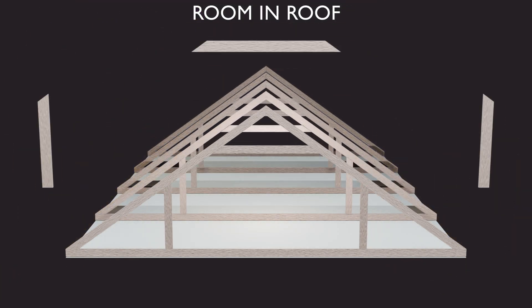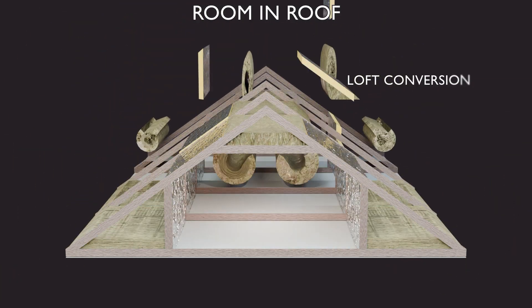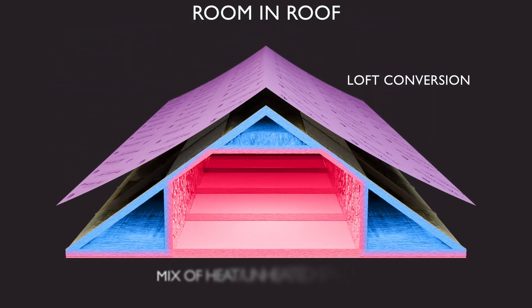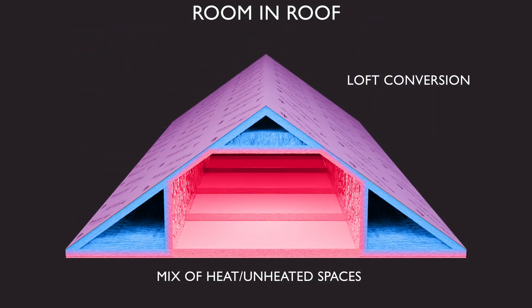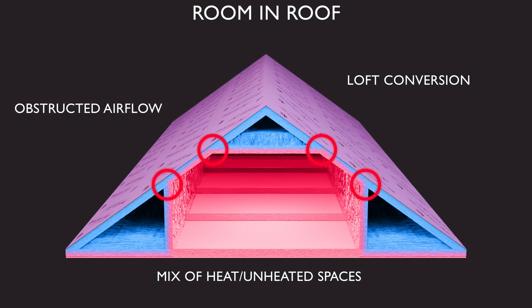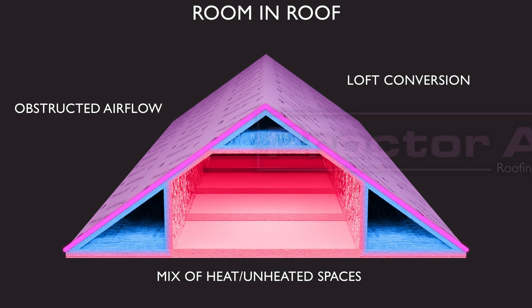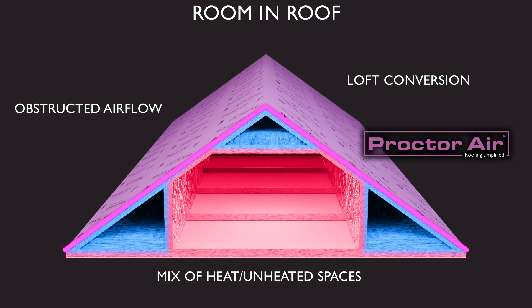The third configuration of roof is the room in the roof, common to many properties where an existing loft has been converted into habitable space. In this type of roof, there is a mix of warm and cold spaces, and this can make providing adequate ventilation across the whole roof difficult. ProctorAire works very well in this type of roof, as it is used in a similar way across both cold and warm areas, and usually requires no ventilation or other special measures in either type of roof. This means it also works well when a roof is built as a cold roof but with provision made for a loft conversion in the future.